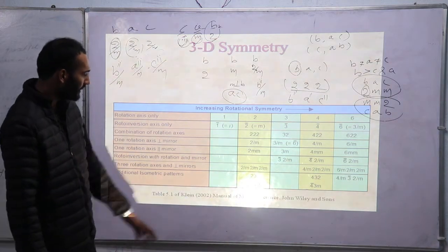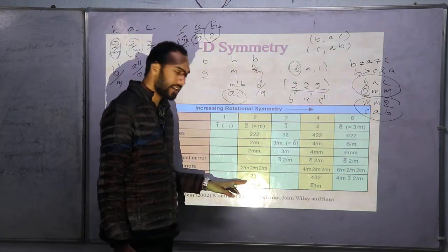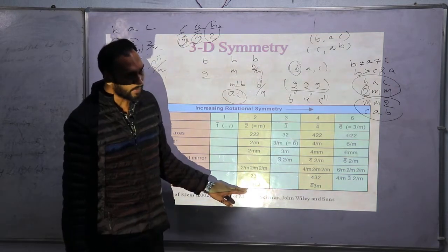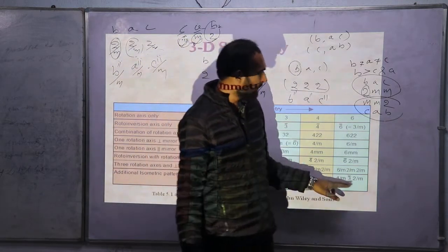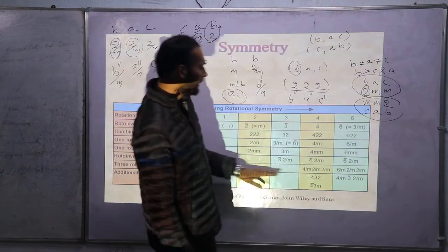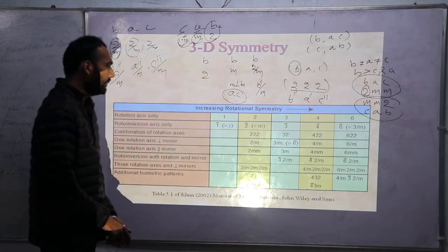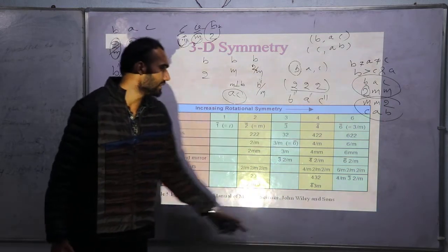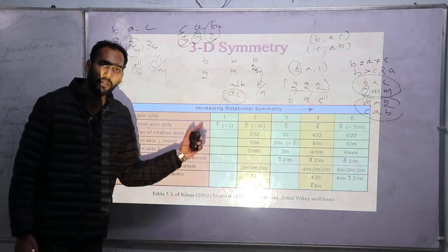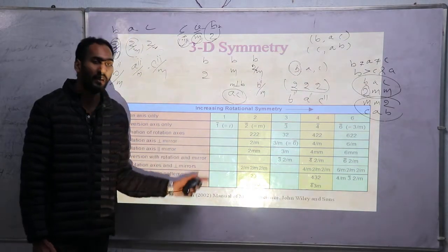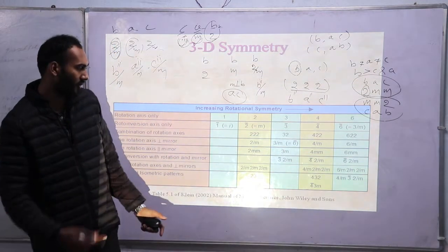Additional isometric classes include 2 3, which is a class in the isometric system; 2/M 3-bar, also in the isometric system; 4 3 2; 4-bar 3 M; and 4/M 3-bar 2/M, which is the normal class of the isometric system. These cover all the 32 crystal classes. We will go through each system and each class individually, and I will show diagrams and stereo plots.